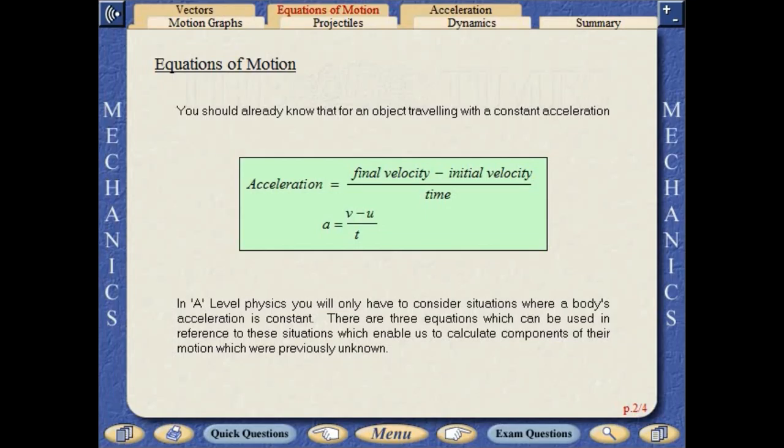You should already know that for an object travelling with a constant acceleration, acceleration equals final velocity minus initial velocity over time. In A-level physics, you will only have to consider situations where a body's acceleration is constant.